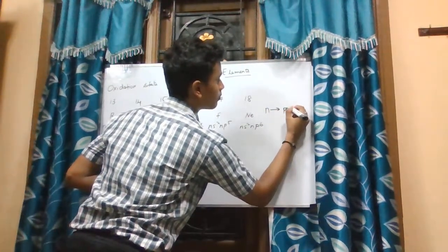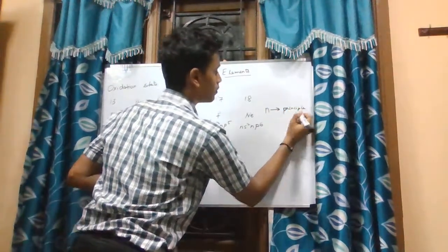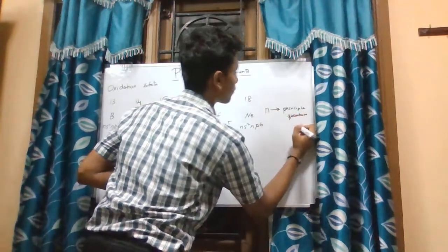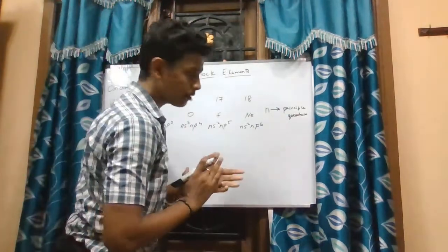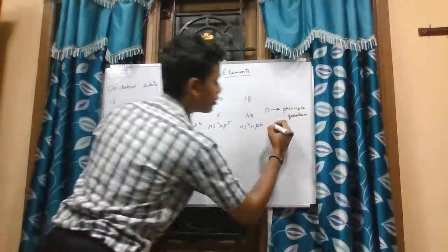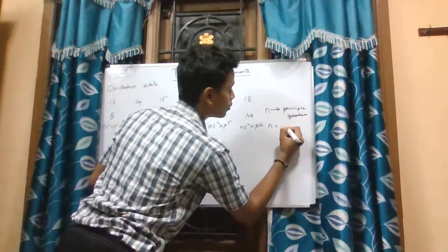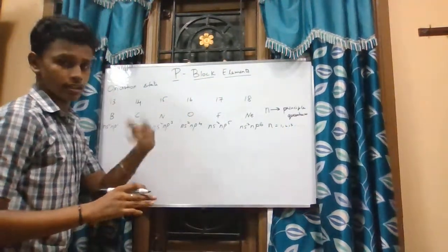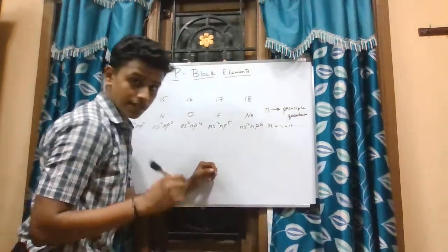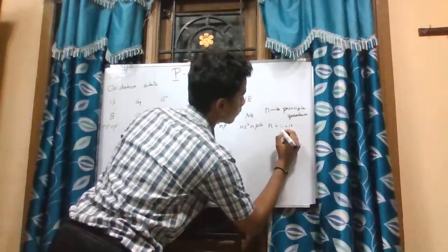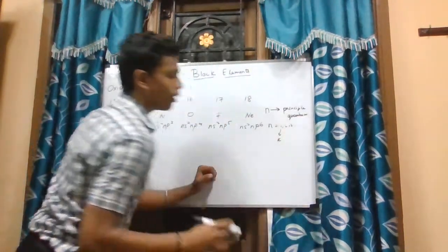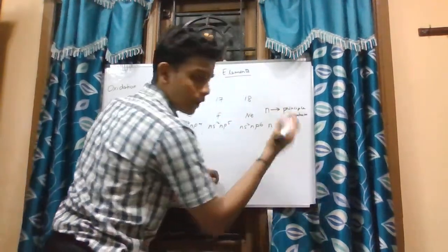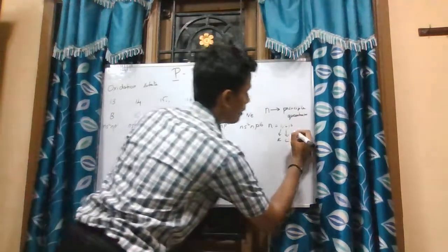The value of n can range from 1, 2, 3, and so on. When n is 1, it occupies the K shell; when n is 2, it occupies the L shell; and when n is 3, it occupies the M shell.